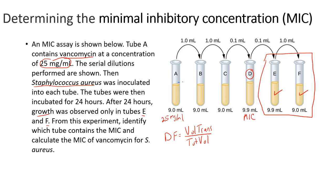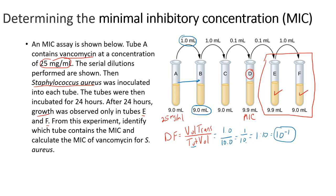For tube A to tube B, the volume transferred is 1 mL, so that would be 1.0 over 10 mL total volume — giving 1 over 10, or a 1-to-10, or 10 to the minus 1 dilution. When performing serial dilutions, it's recommended to write your dilution factors as an exponent in this fashion. The number of zeros in the denominator is equivalent to the negative exponent — so 1 zero equals 10 to the minus 1.